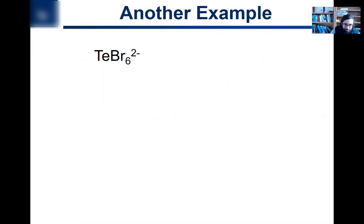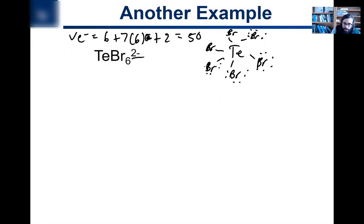So here's another example where geometries and sterics tend to play a role. Let's go through it. Number of valence electrons. Tellurium is six, it's a chalcogen. Bromine is seven, it's a halogen, but we have to add two because of the two minus charge. So that's eight plus 42, that's 50 valence electrons. And so then we connect everything. We're going to have six of these bromine atoms, and I'm going to put a lone pair everywhere.